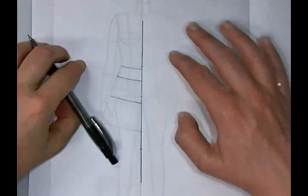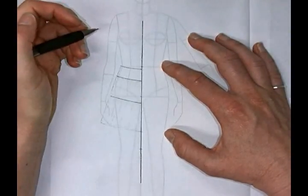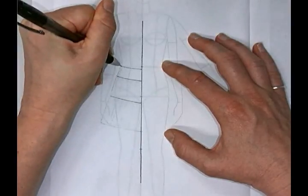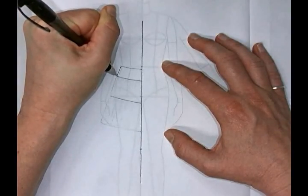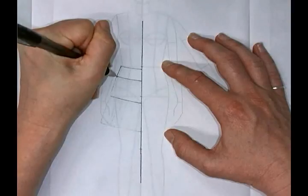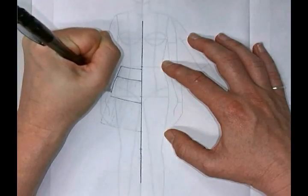We want to then draw out our side seam, making sure that we've got a nice amount of ease and the correct shape of the skirt.